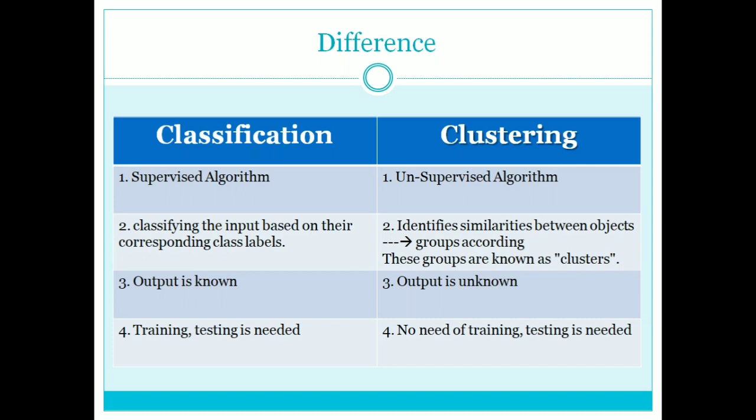There are different types of machine learning classifications such as supervised, semi-supervised, unsupervised, and reinforcement learning. The classification algorithm comes under the supervised category, whereas clustering algorithms come under the unsupervised category.